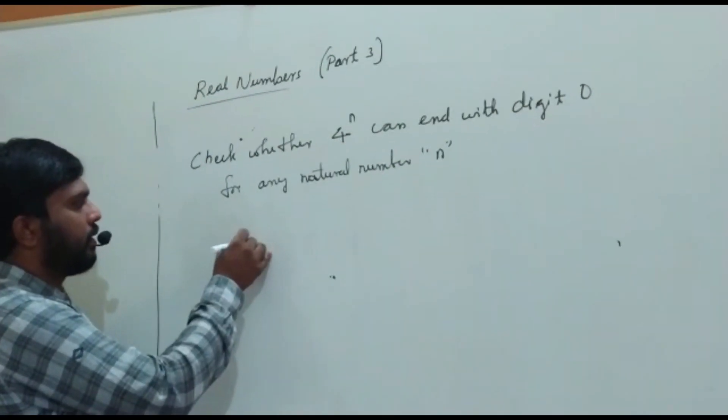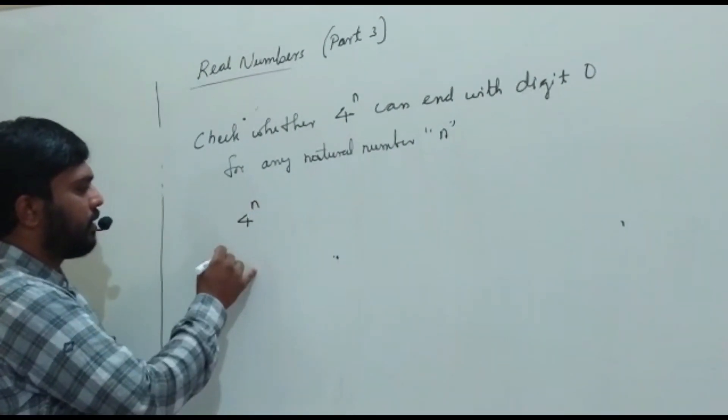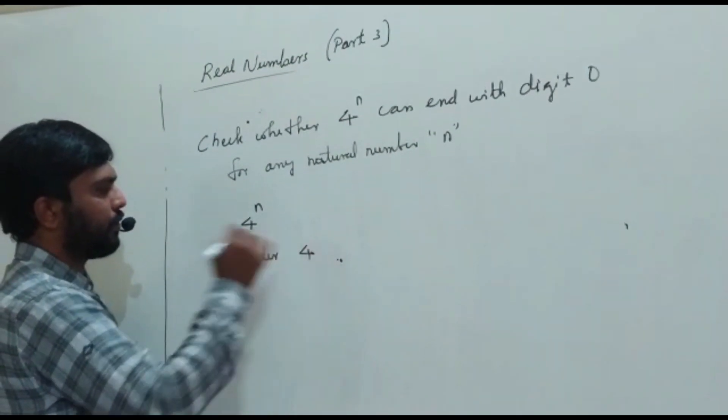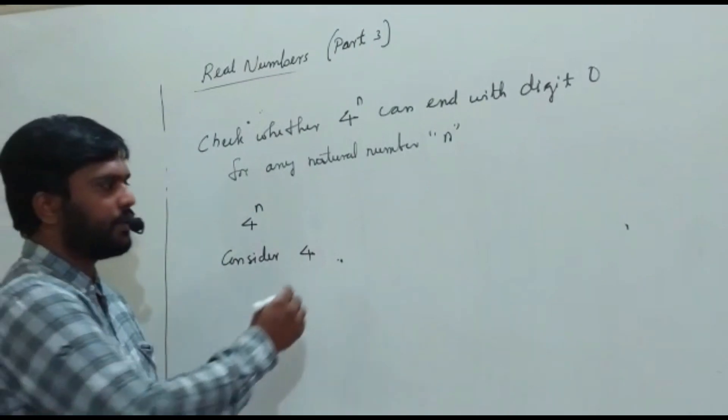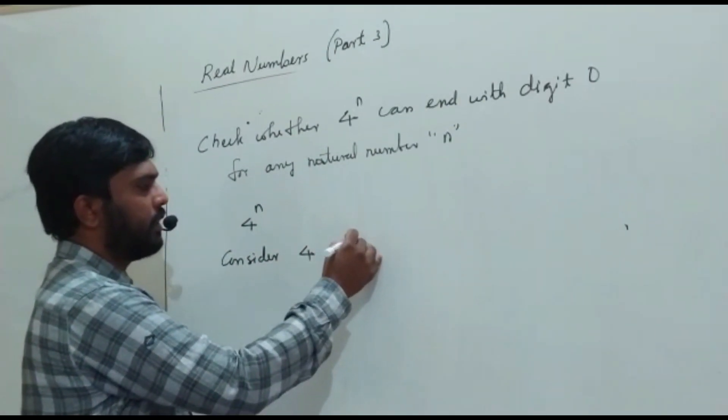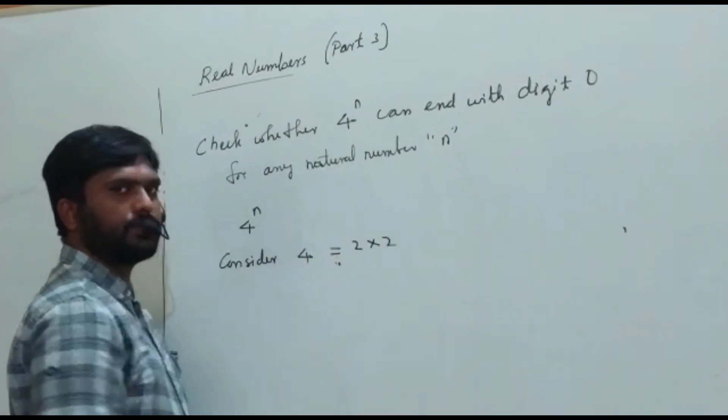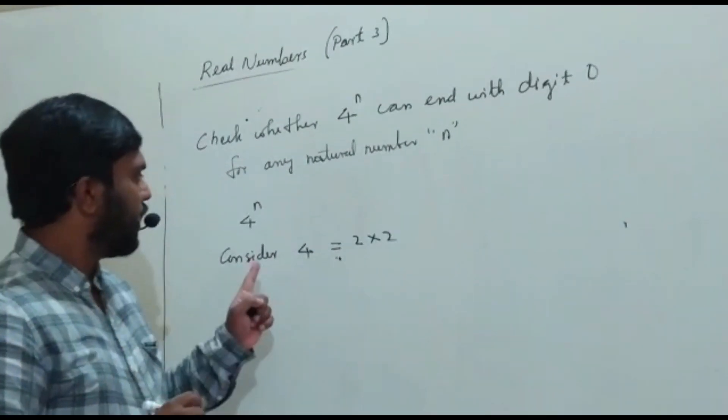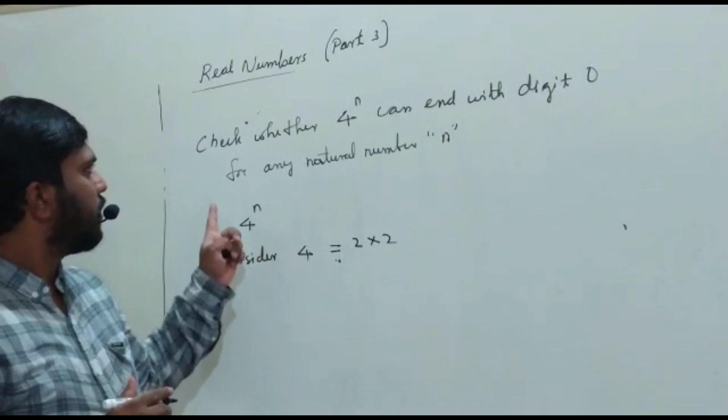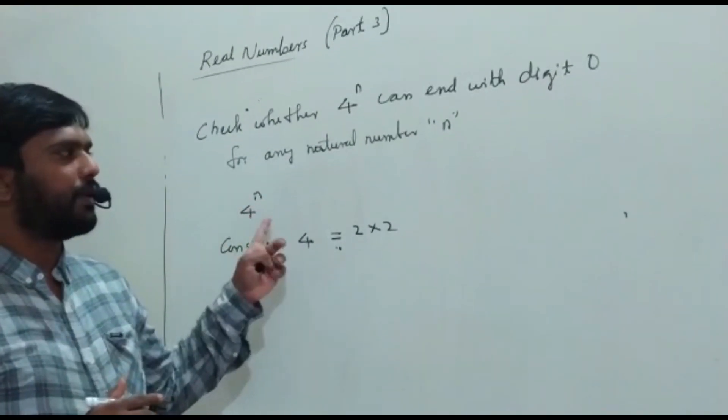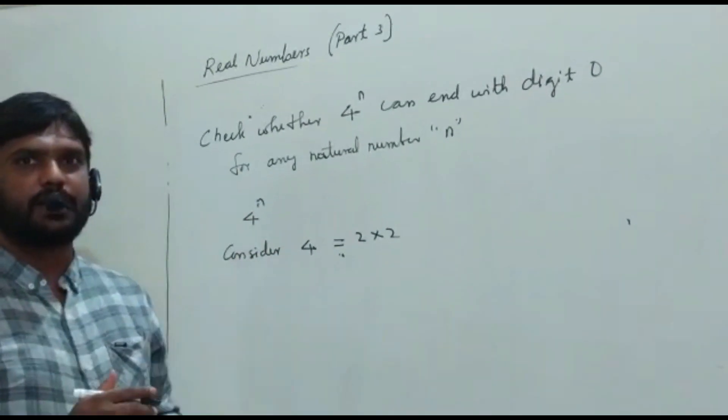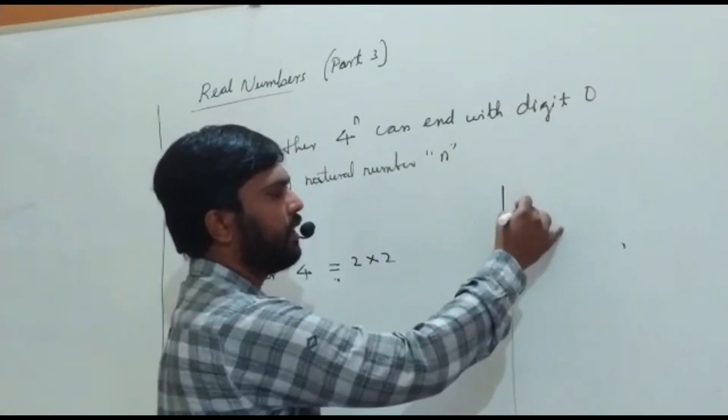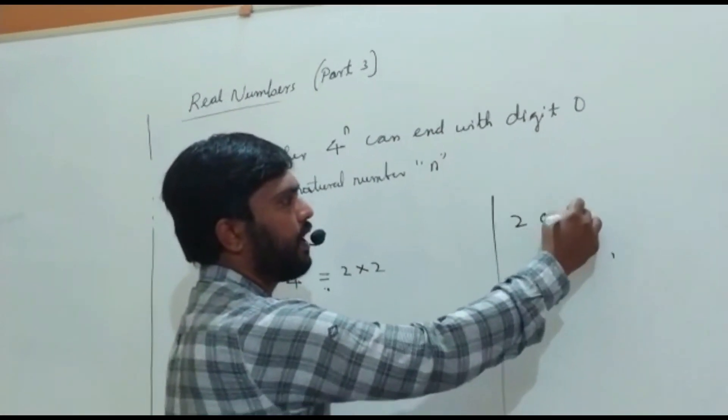So 4 to the power of n. Consider 4. Prime factorization of 4 is 2 into 2. You have to know one thing: if a number has to end with digit 0, the prime factorization should be 2 and 5.